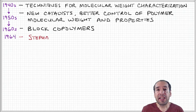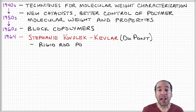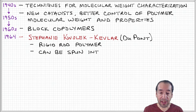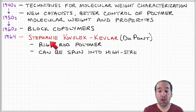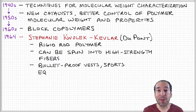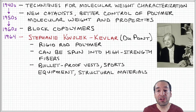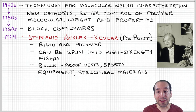An important discovery in the 1960s is the discovery of a material called Kevlar. This was discovered at DuPont by a chemist named Stephanie Kwolek. It was not necessarily an accidental discovery, but an unintentional one — Stephanie Kwolek and her team were doing research to develop new materials to continue satisfying the needs of this growing market.